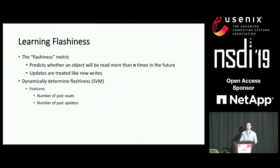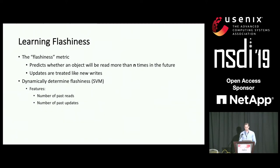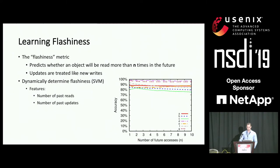Instead, we use machine learning to learn which objects are flashy for each application. We define flashiness as whether the object will be read more than n times in the future. N is a configurable parameter indicating sensitivity to write amplification — a larger n means more sensitivity to write amplification; a smaller n is more sensitive to hit rates. We use a binary classifier, SVM (support vector machine). The two most impactful features are the number of past reads per object and the number of past updates. The accuracy ranges from 75% to 100% across different applications in Memcashier.